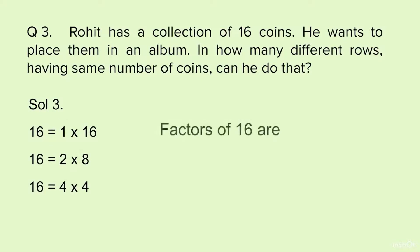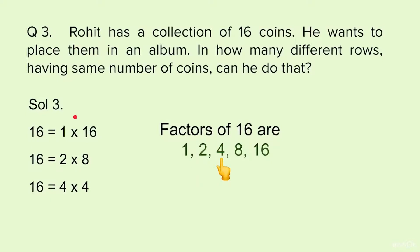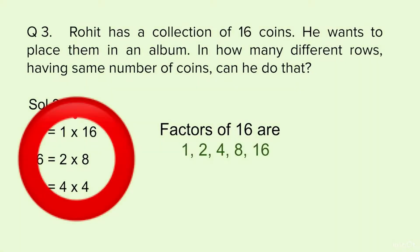The factors of 16 are 1, 2, 4, 8 and 16. Rohit can have 1 row, 2 rows, 4 rows, 8 rows or 16 rows. To find out how many coins will be in each row for any of these options, we refer to the multiplication done here.